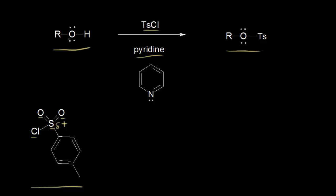It can get electrons from the alcohol, so a lone pair of electrons on the alcohol here can attack the sulfur — a nucleophile attacks the electrophile — and these electrons could kick off onto the chlorine here to form the chloride anion.